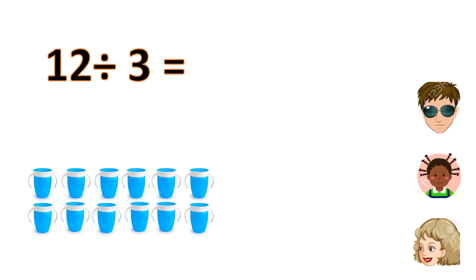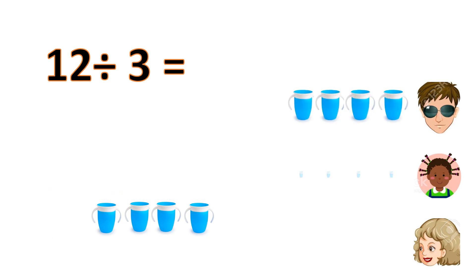you can use division to find out how many cups each friend will get. So, 12 ÷ 3 = 4 cups each. The divided by sign represents division.